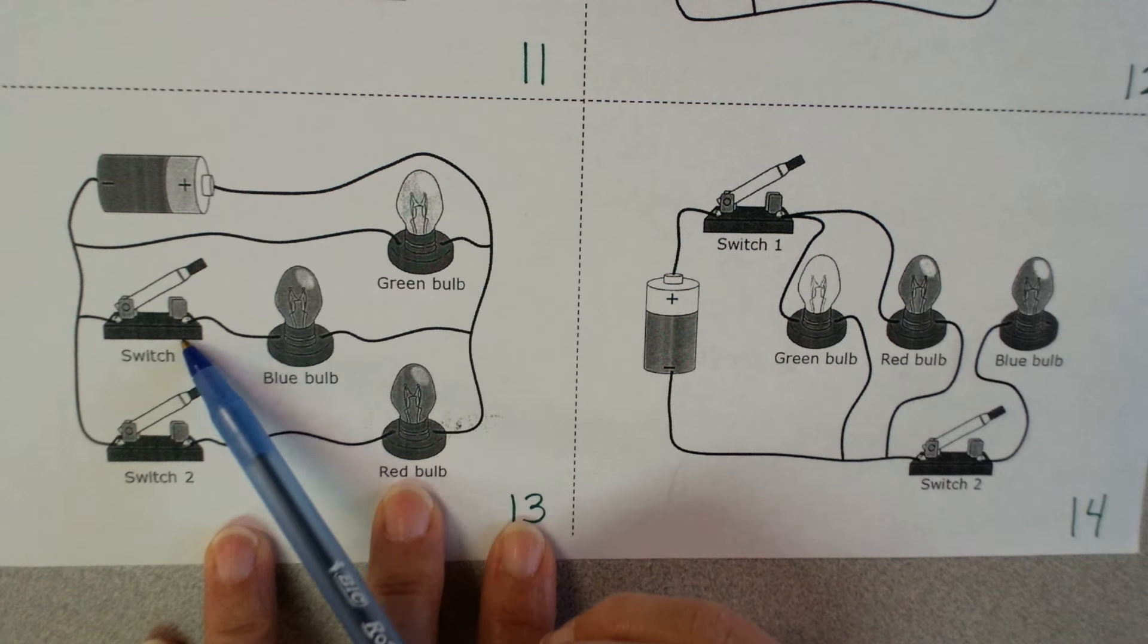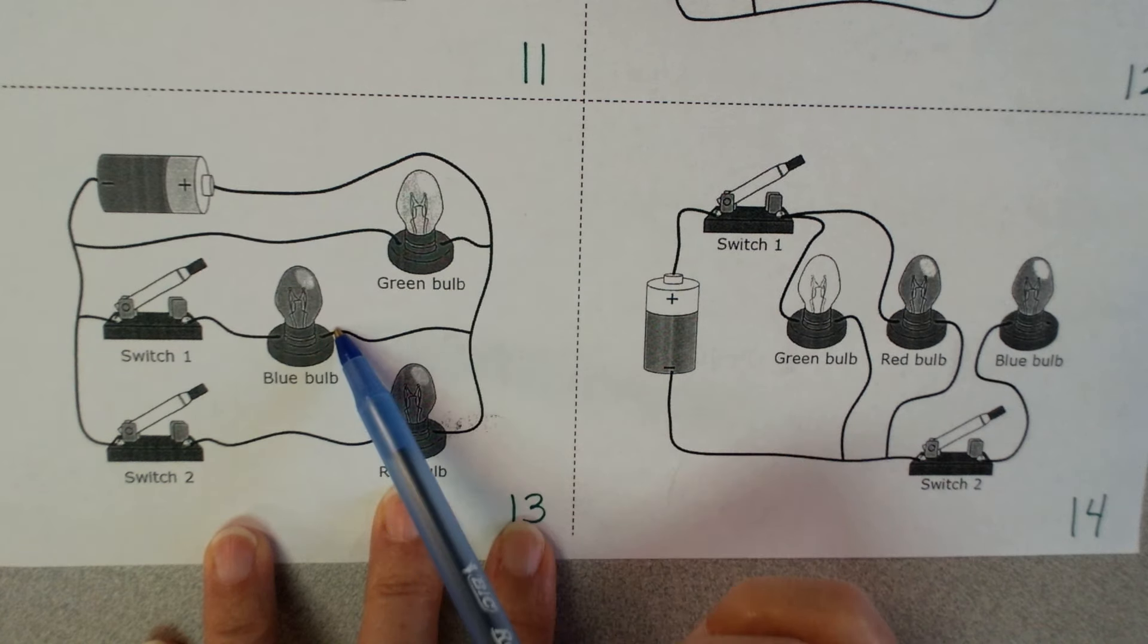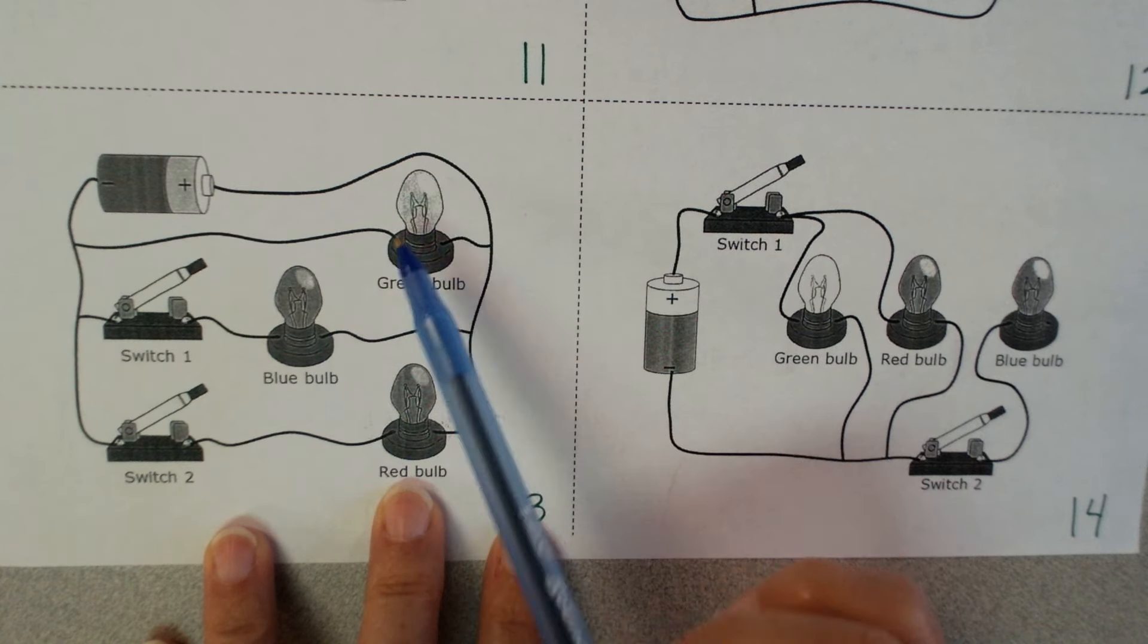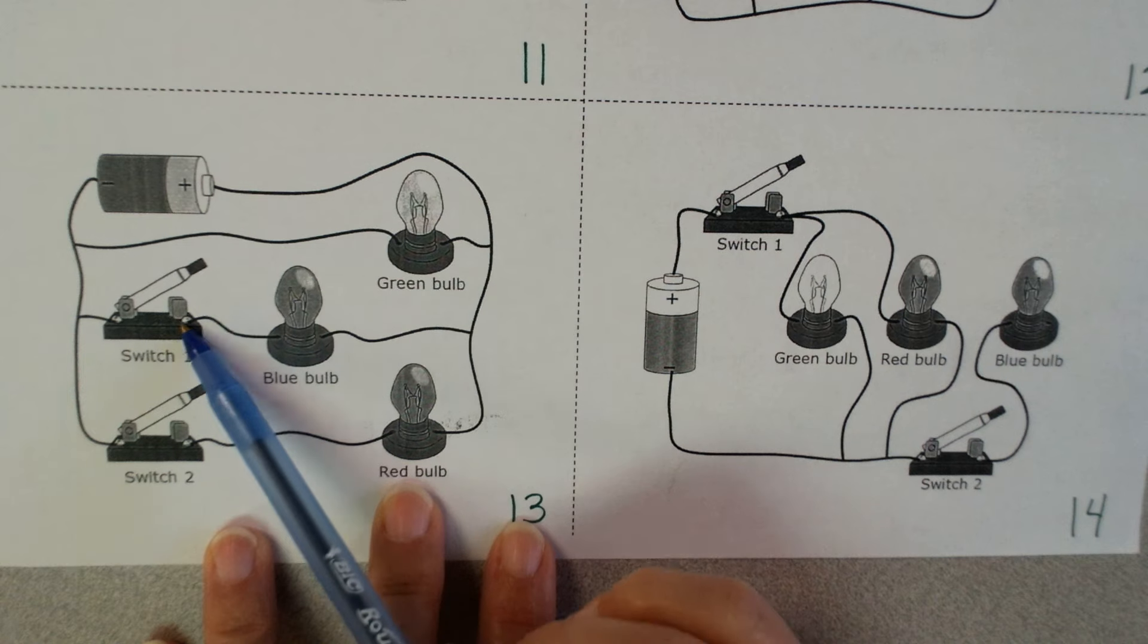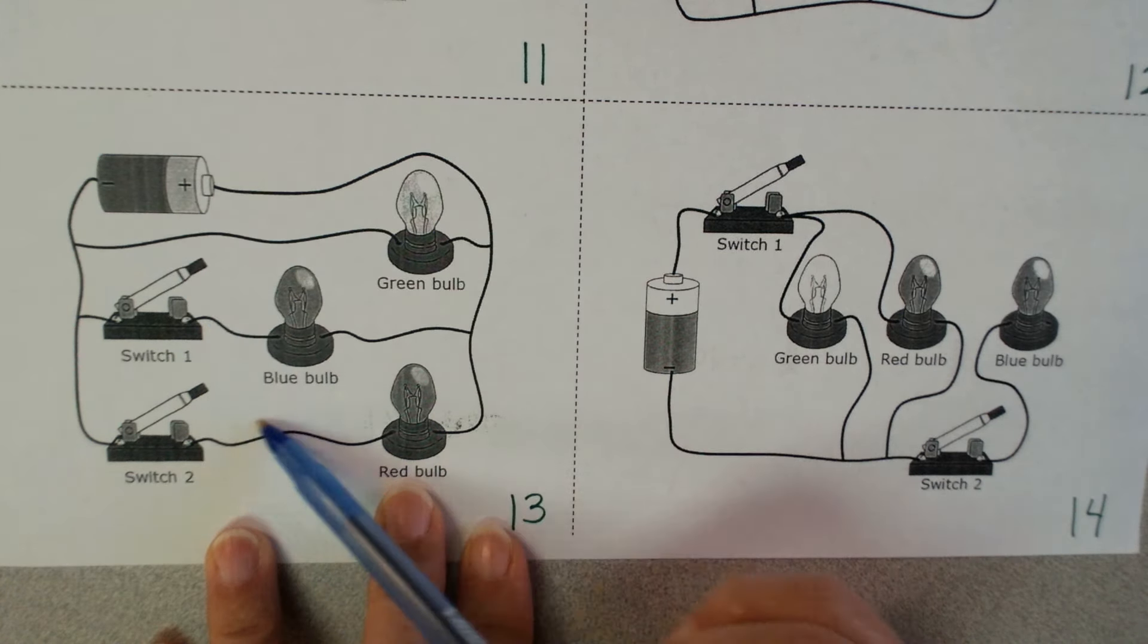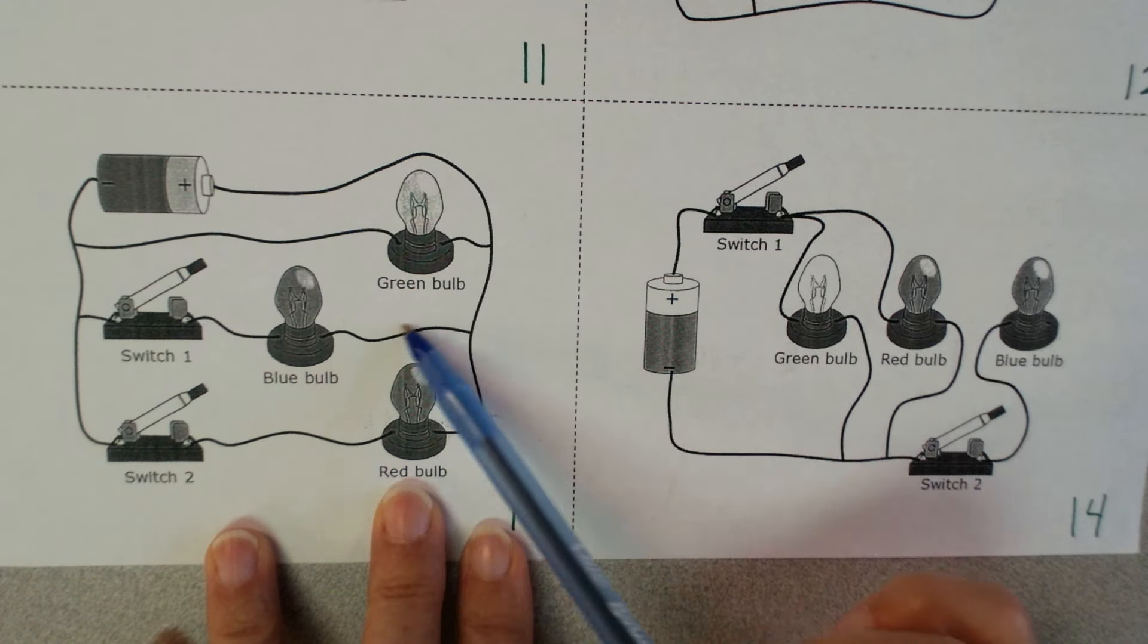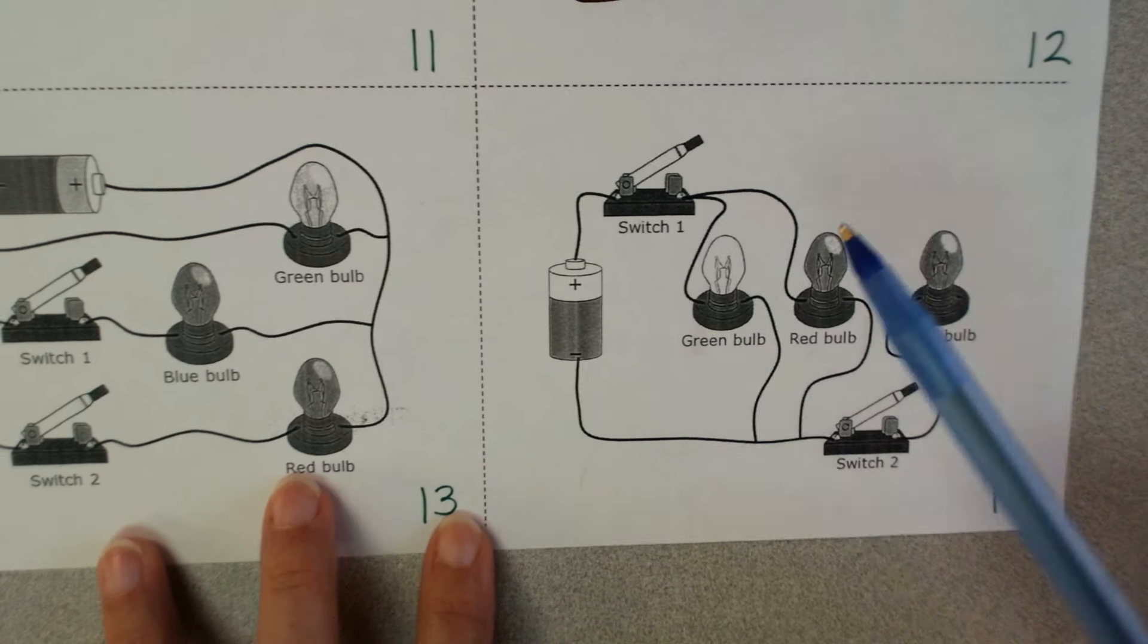There's no switch controlling it. But if I close switch one, that means now electricity can go through the blue, and so it would be lit. So blue and green, right? Okay, well let's leave switch one open and close switch two. Now it can go through the red bulb and the green bulb. If switch one is open, it's not going to make it through the blue.